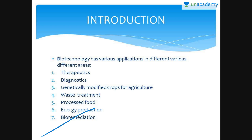Plants, bacteria, fungi, and animals whose genes have been altered by manipulation are called genetically modified organisms or GMOs. There are several advantages of genetic modification in plants: crops are made more tolerant to abiotic stresses like cold, drought, salt, or heat; they help reduce post-harvest losses; and there is increased efficiency of mineral usage by plants.